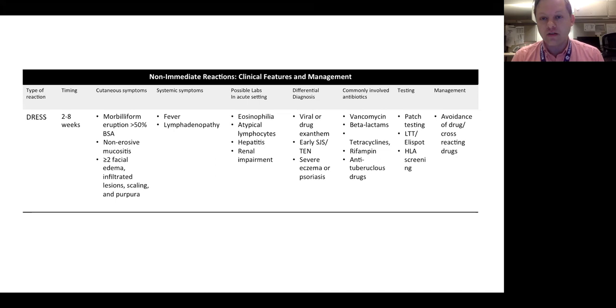The symptoms that are classic for DRESS are a morbilliform eruption present over at least 50% of body surface area. Some patients will have non-erosive mucositis. All the patients I've seen with DRESS syndrome have this sort of classic doughy facial edema. Oftentimes there's some scaling and purpura. The systemic symptoms are fever and lymphadenopathy. It's always important to do a very good lymph exam in a patient who you think might have DRESS syndrome.